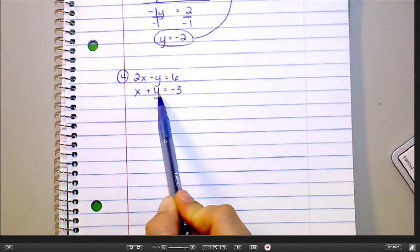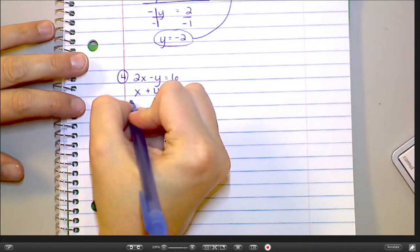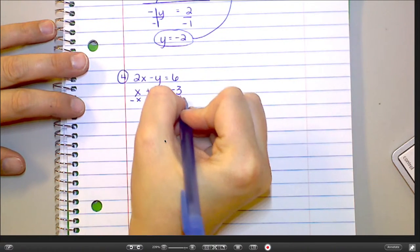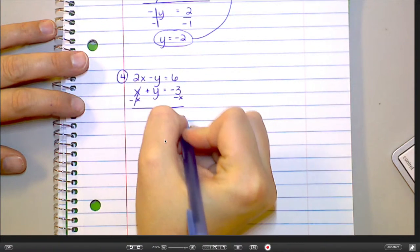So we want to get this y by itself. Brett, what do I need to move? Yeah, let's get rid of the x. So let's subtract the x. So now I have y equals negative x minus 3.